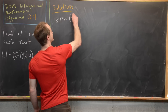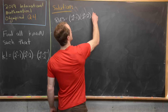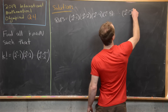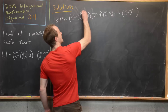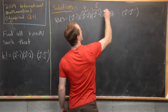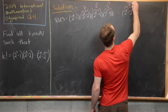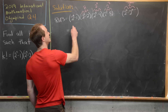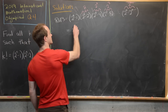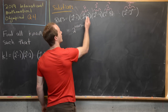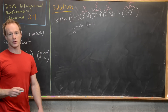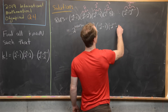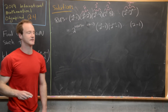We have two to the n minus one, then two to the n minus two, then two to the n minus four, two to the n minus eight — that's two cubed — all the way up, ending at two to the n minus two to the n minus one. I can pull a two out of the first term, a two squared out of the second, a two cubed out of the third, and finally a two to the n minus one out of this last term.